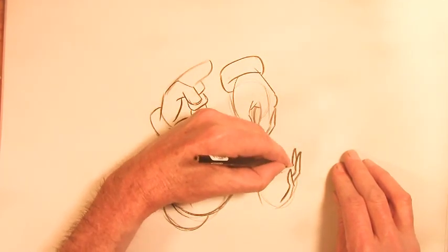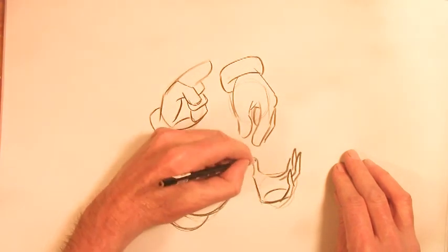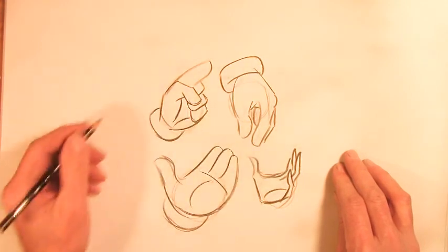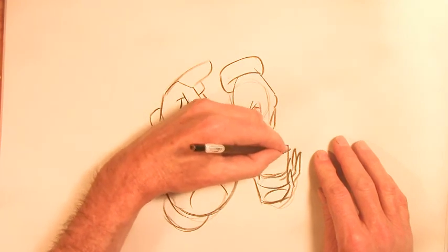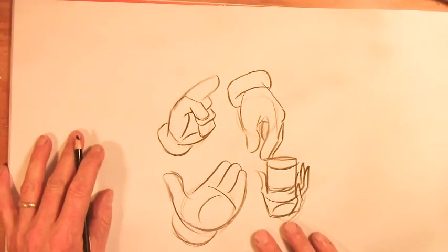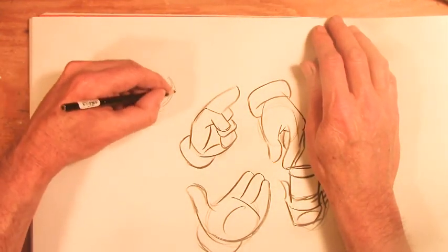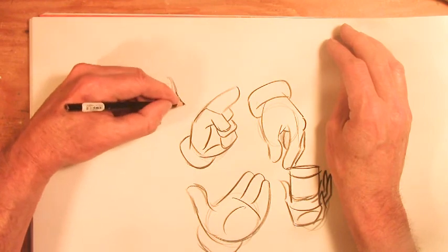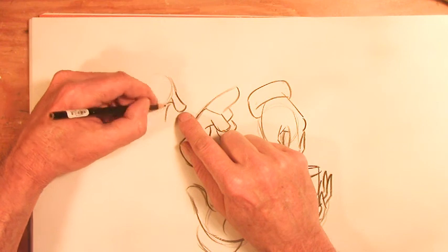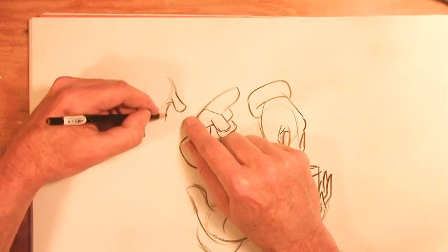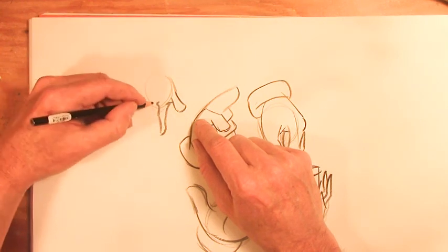If you want thin fingers, kind of more of like a woman's hand, maybe holding something like a jar or whatever. And really it's just about practice. Just drawing and building. Notice how this line goes behind that, and this line goes in front of that one. And here's your knuckles.